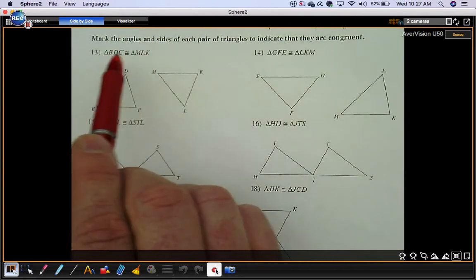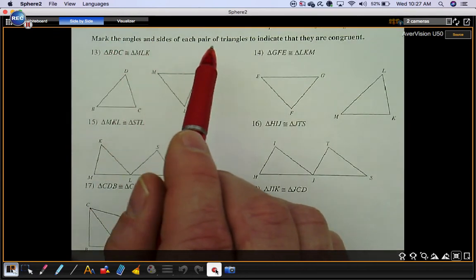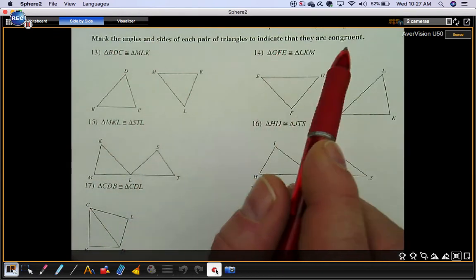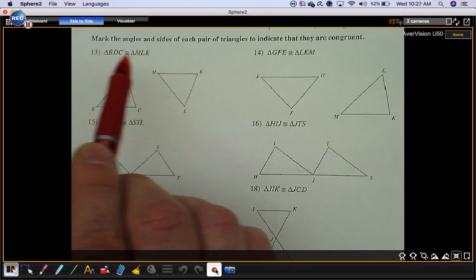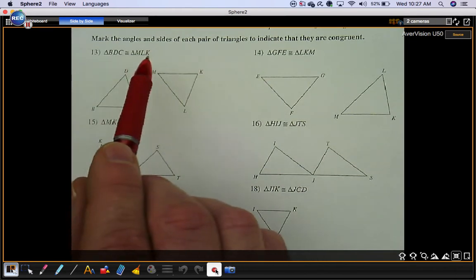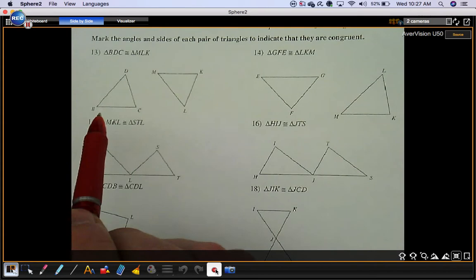For 13 on, we're going to mark the angles and sides of each pair of triangles to indicate that they are congruent. So they're telling you these two triangles are congruent, so we know six things. What six things do we know? Well, we know angle B is congruent to angle M, so I'm going to put matching arcs on those angles.